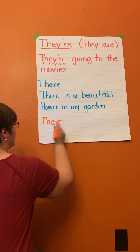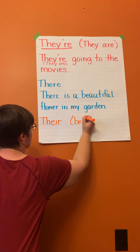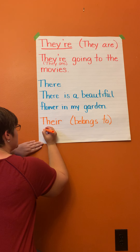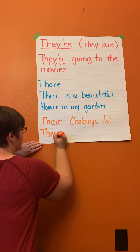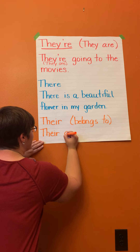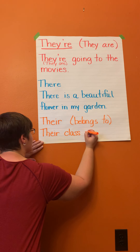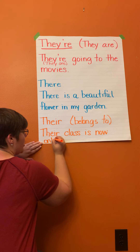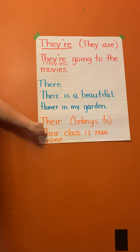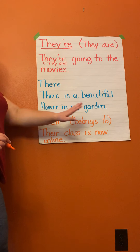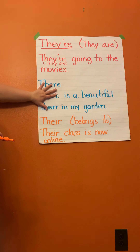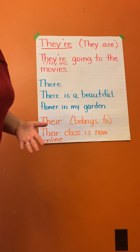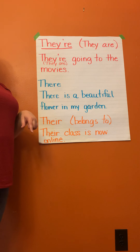T-H-E-I-R. This one means that it belongs to someone. So, 'their class is now online.' Those are people — these show belonging to someone. This form is for possession, this one is used just in general, and this one is a contraction. I know they all sound the same, but there is a difference. Let's see if you can take the quiz and decide which one fits.